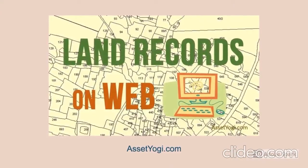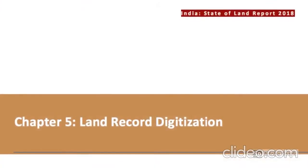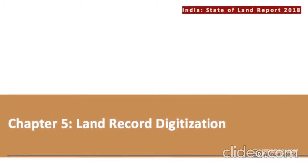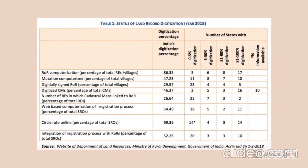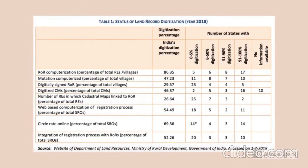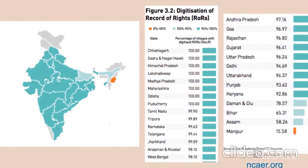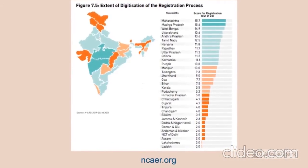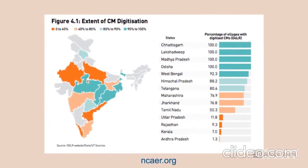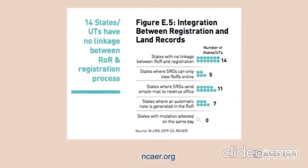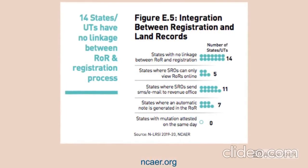This scheme has been in action successfully for a little over a decade across the country. However, there are many issues with it as well. In their State of Land Report 2018, the Centre for Land Governance noted that while there has been significant achievement in computerization of records of rights, its integration with cadastral maps is not up to the mark. The scheme achieved a countrywide percentage of 86.35% for computerization of records and around 54% of all sub-registrars' offices are computerized, while 46% of all cadastral maps are digitized, but the rate of integration is only at 26.64%.